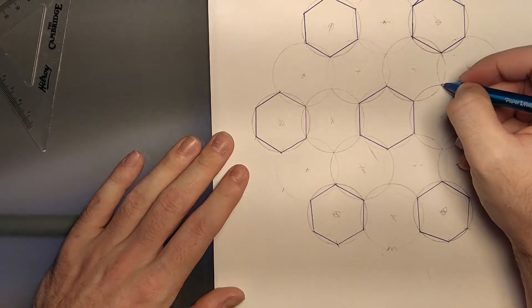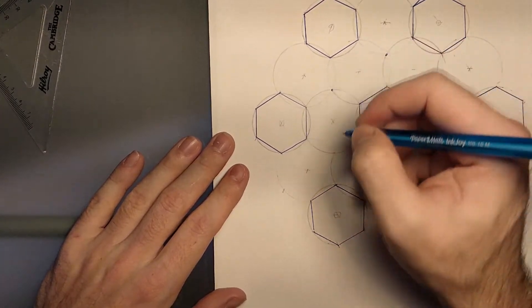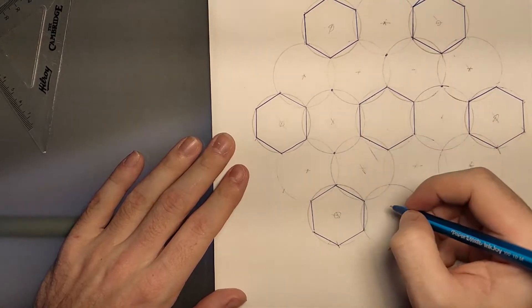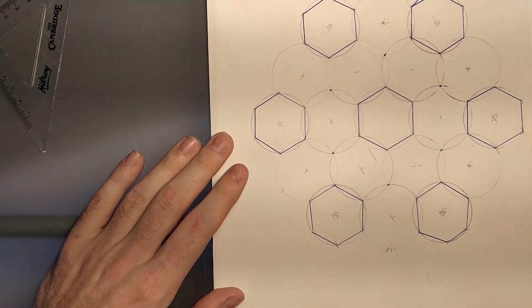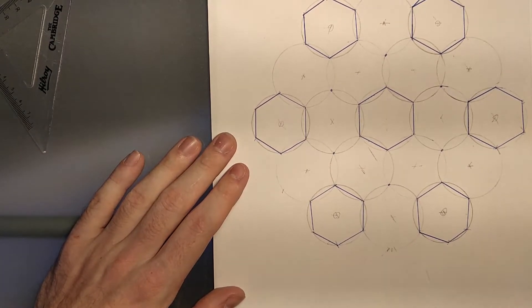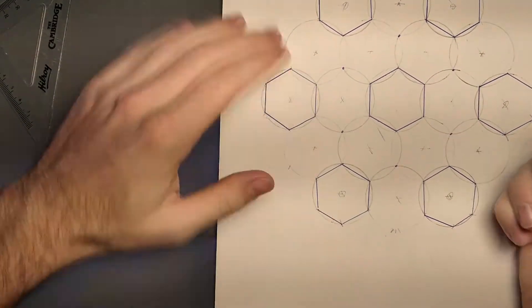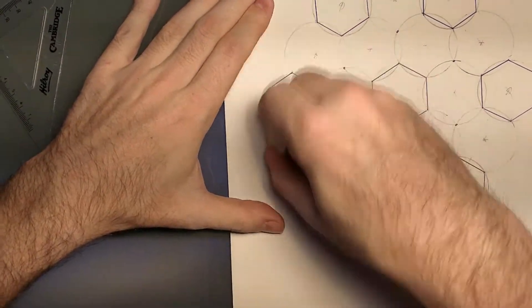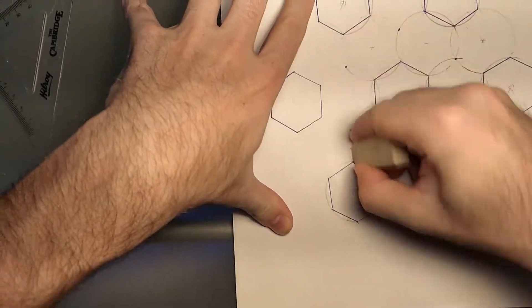All I'm going to do is mark each and every one of these intersections. Hopefully not forget anything. Once all those are marked, I'm going to go ahead and erase all of my pencil marks.